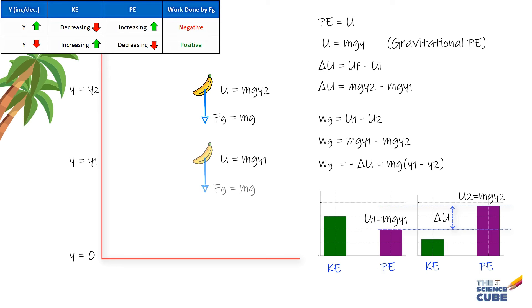Another interesting observation is that the potential energy of an object is associated with its position rather than its motion. If you are told the position of an object at any given time, you can determine its potential energy. You should also ask: why do we call it potential energy?